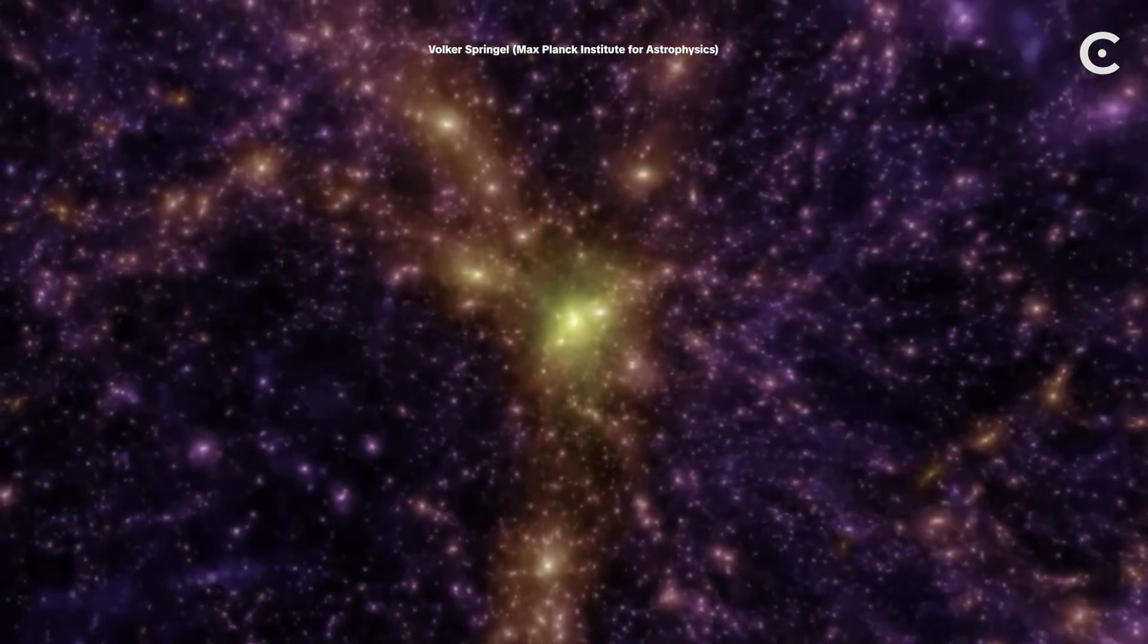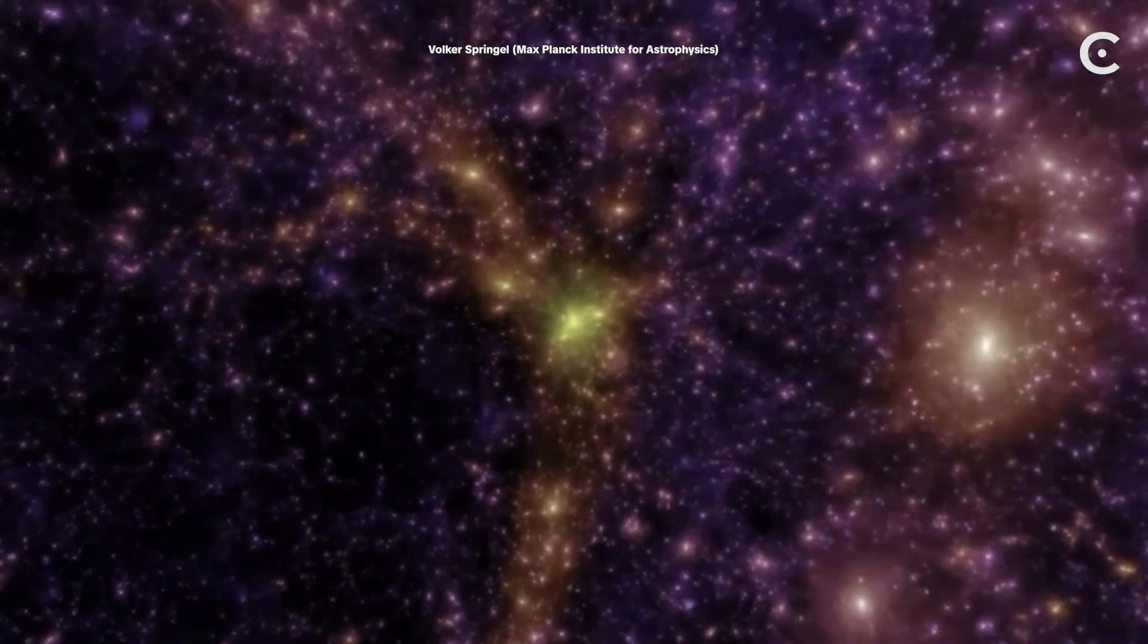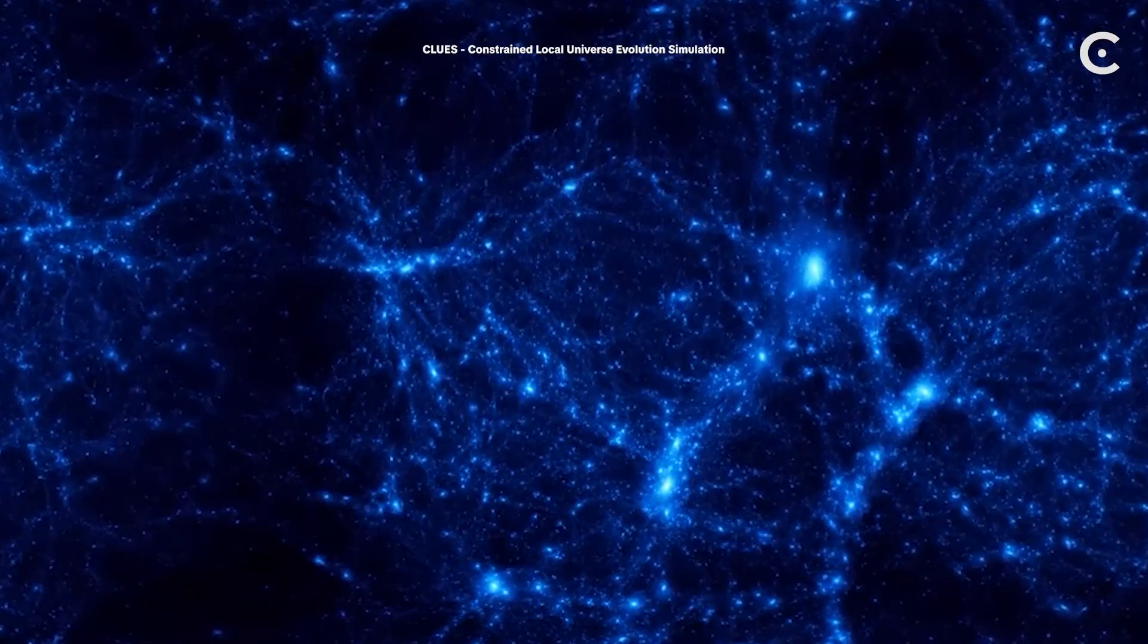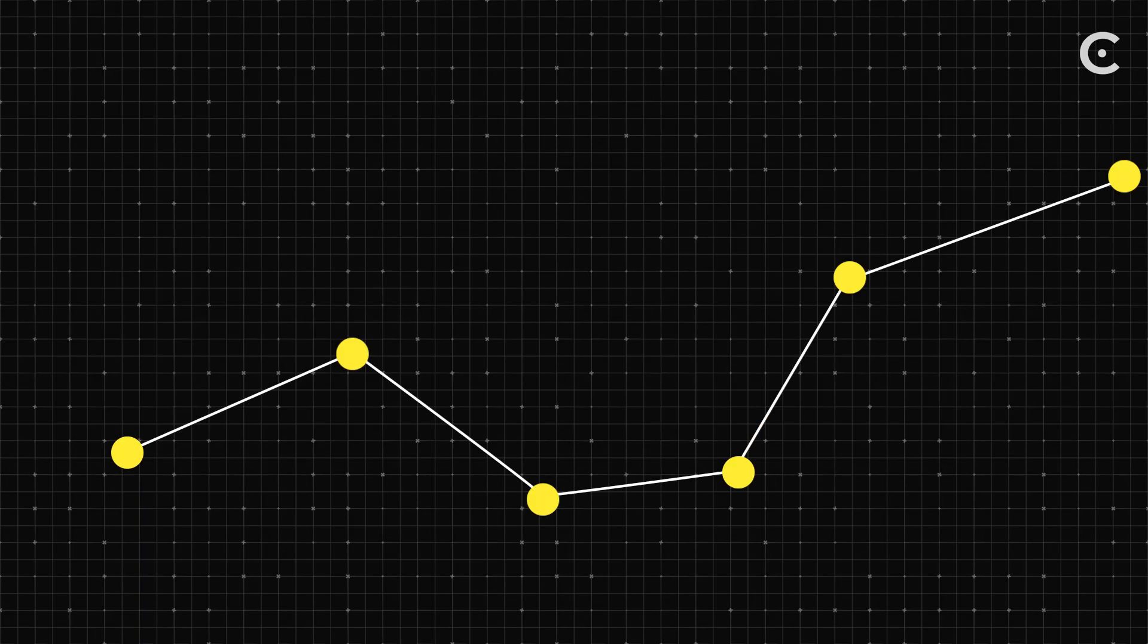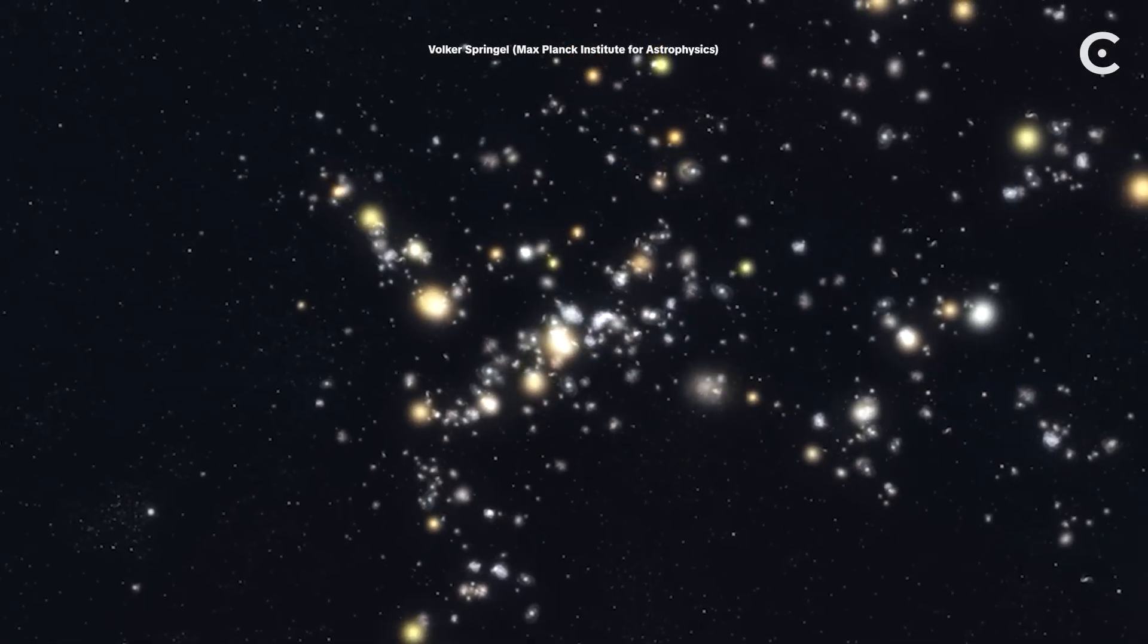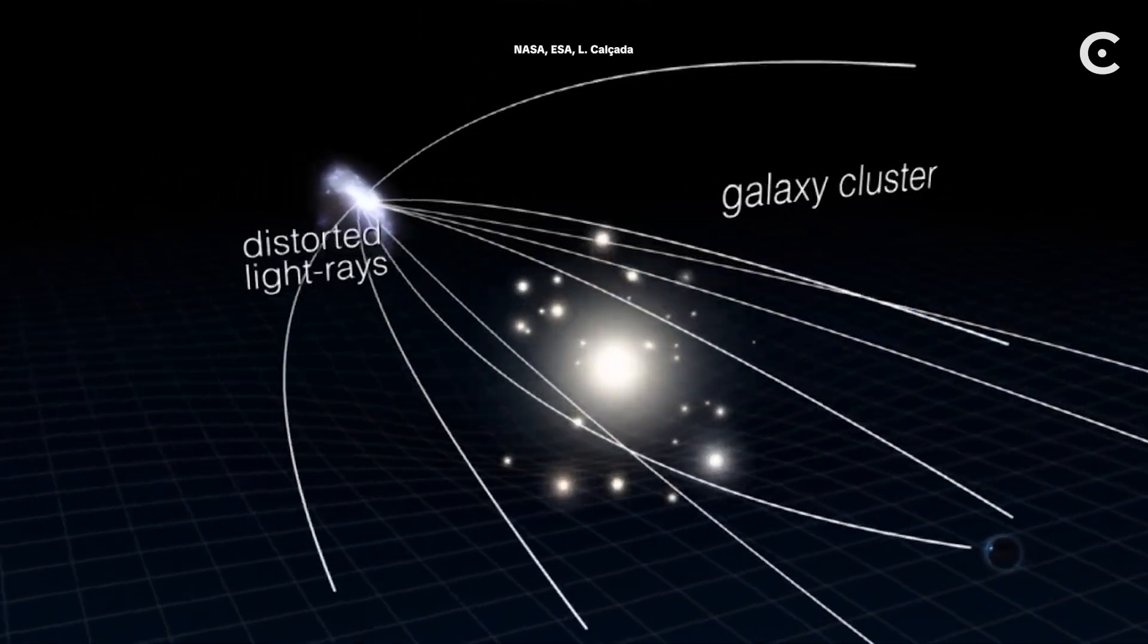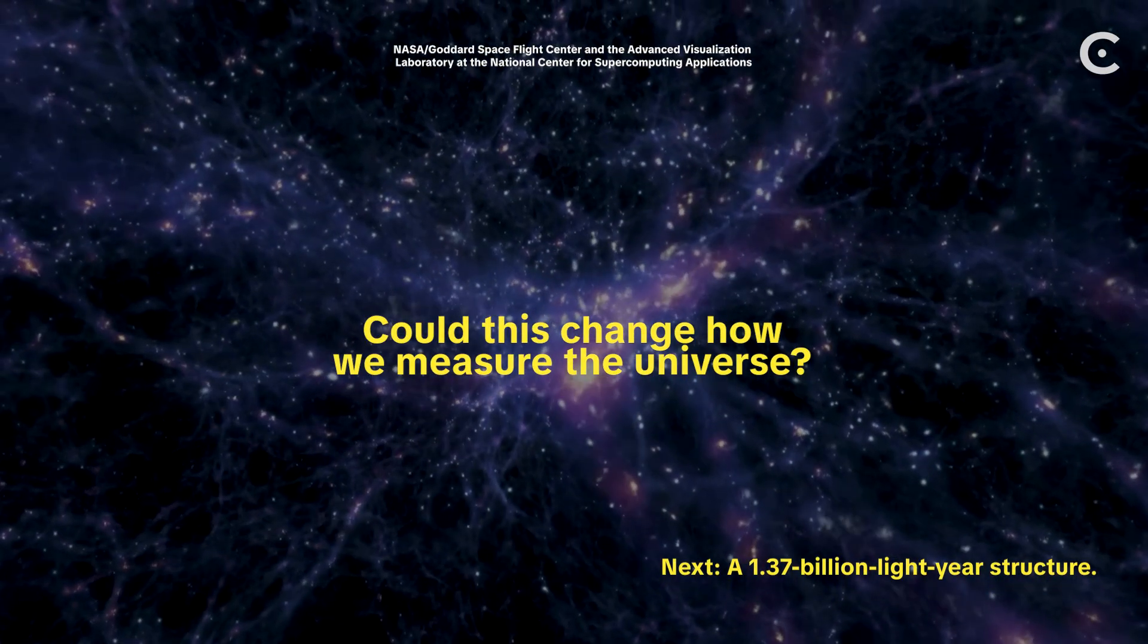Here's the wild part. The Quipu isn't far away. It's one of the largest structures in our local universe. It's basically in our backyard, cosmically speaking. And we only just found it. Why did it take so long? Because this thing is so spread out, so diffuse, that you need incredibly precise X-ray observations to even see the pattern. It's like trying to spot a connect-the-dots picture when the dots are millions of light years apart. And here's something that might matter a lot. Structures this big can actually mess with our measurements of the universe. They create gravitational lensing. They affect how we calculate cosmic expansion. The Quipu might be influencing data we've been collecting for decades.